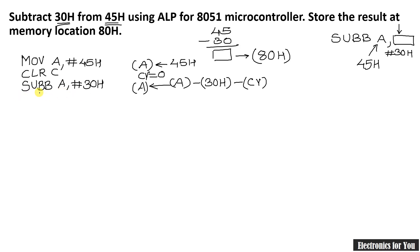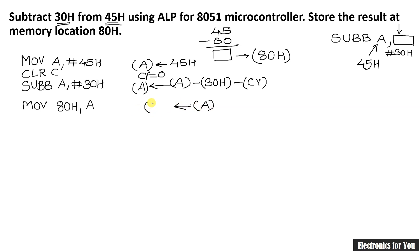Therefore, the instruction SUBB A, comma hash 30H will be valid here. Now, the result is to be stored at 80H. Therefore, the data transfer instruction MOV will be used here. This is a memory location and the result is in the accumulator. So our source is the accumulator and destination is 80H — that is memory location 80H. I am using MOV 80H, comma A as my instruction. The data of the accumulator will be copied to internal memory location 80H.